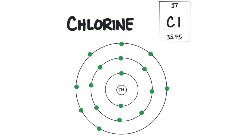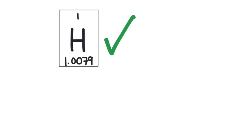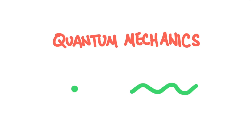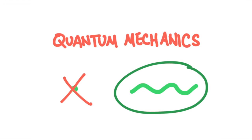Bohr diagrams are useful because they show which energy level the electrons fit into. However, they don't describe what these energy levels actually look like. The Bohr model really works well for hydrogen, which only has one electron, but it doesn't work that well for anything else — which is a pretty big problem because there are 117 other elements we can't describe very well with the Bohr diagram. In the 1920s, a new model was developed called quantum mechanics.